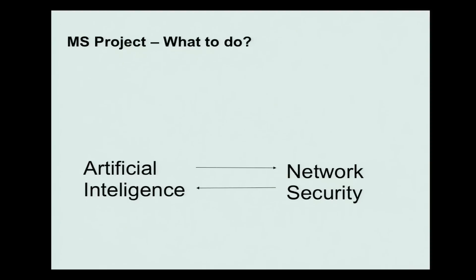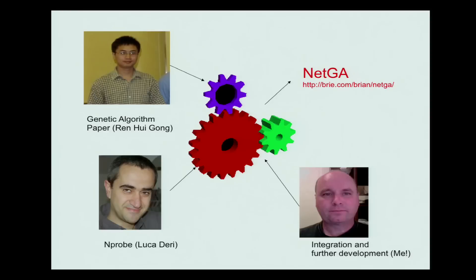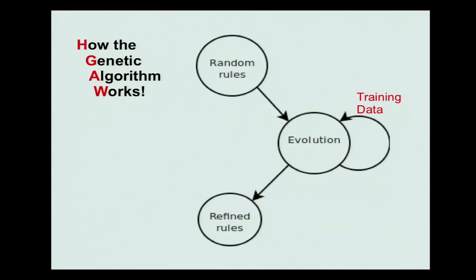I was taking an artificial intelligence class at the same time I was studying network security. I did some research and found some papers — one of them was an implementation using AI or genetic algorithms written by Ren Hui Gong. I made a proposal and submitted it to my professor to do the same implementation, do the coding, and originally integrate it into Snort. I ended up actually integrating it into nProbe.